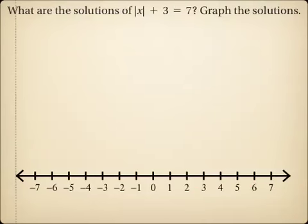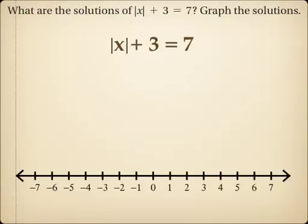The first example says: what are the solutions of the absolute value of x plus 3 equals 7, and then asks us to graph the solutions. Notice the two bars on either side of the x — that is the absolute value symbol. Whatever is inside the absolute value symbol, if it is negative, it is turned positive.